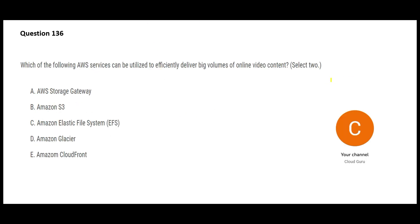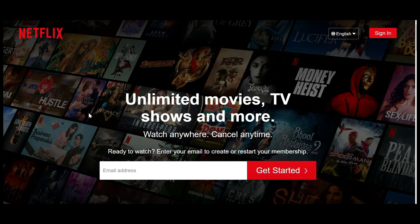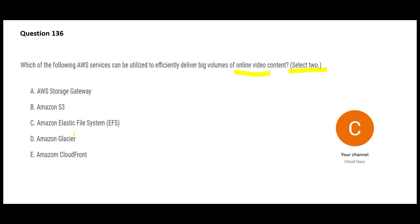Let's look at this question — we need two answers, not one. There is a big volume of online video content, like Netflix. For online content delivery in the AWS world, you will keep the videos on S3 and use CloudFront for content distribution and caching.